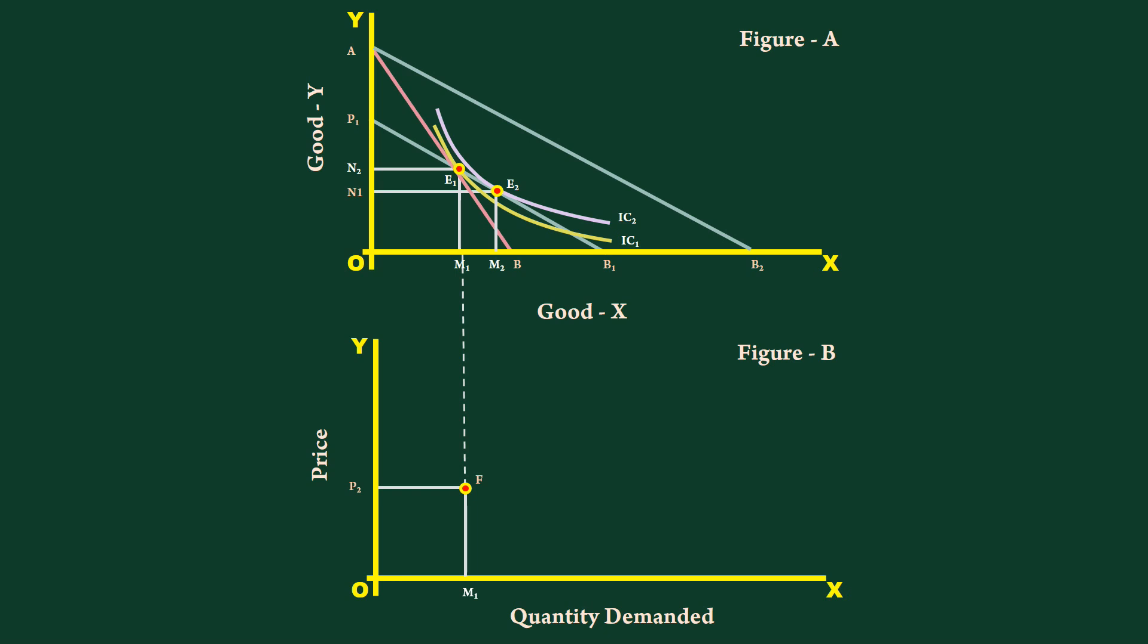The price falls to P1. After eliminating the income effect, due to substitution effect, the consumer buys M2 units. At P1 price, the consumer buys M2 units. Let us plot this data also in figure B.